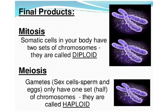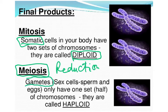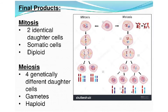Mitosis occurs only in body (somatic) cells, which have two sets of chromosomes and are diploid. Meiosis is another type of cell division, also called reduction division because the chromosome number is reduced. Meiosis only happens in the formation of gametes — the sex cells, sperm and eggs — which have one set of chromosomes and are called haploid, written as n.